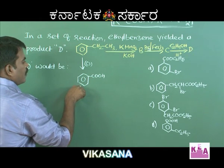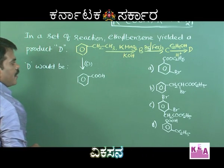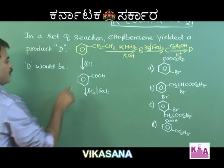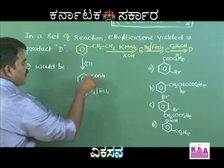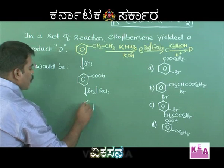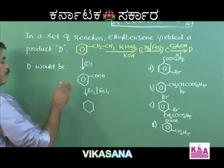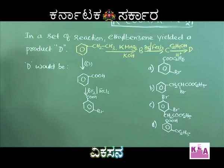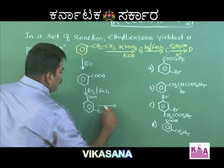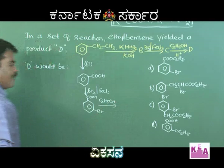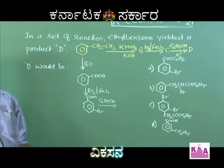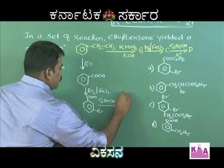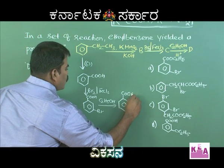Benzoic acid (COOH group on benzene ring) undergoes electrophilic substitution with bromine in the presence of a halogen carrier like FeCl₃. Since COOH is an electron-withdrawing and deactivating meta-orienting group, bromination takes place at the meta position. Then esterification with ethanol (Fischer esterification) occurs.